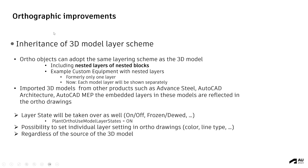Continuing with improvements for autographic drawings: inheritance of 3D model layer schemes. There are two topics here. The first is about nested layers of nested blocks. Formerly, if you had equipment with nested blocks and layers, everything was saved on one layer only — it was not possible in an autographic drawing to turn on, off, thaw, or freeze the nested layers of nested blocks separately. With 2025, this is now possible.